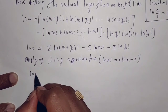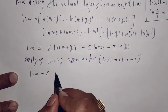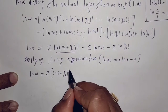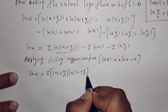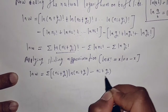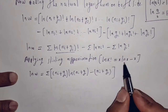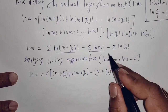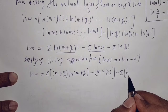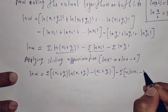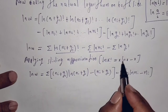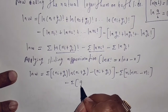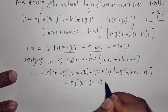Then we get ln(W) equal to summation of [(ni + gi)·ln(ni + gi) - (ni + gi)], minus summation of [ni·ln(ni) - ni], minus summation of [gi·ln(gi) - gi].